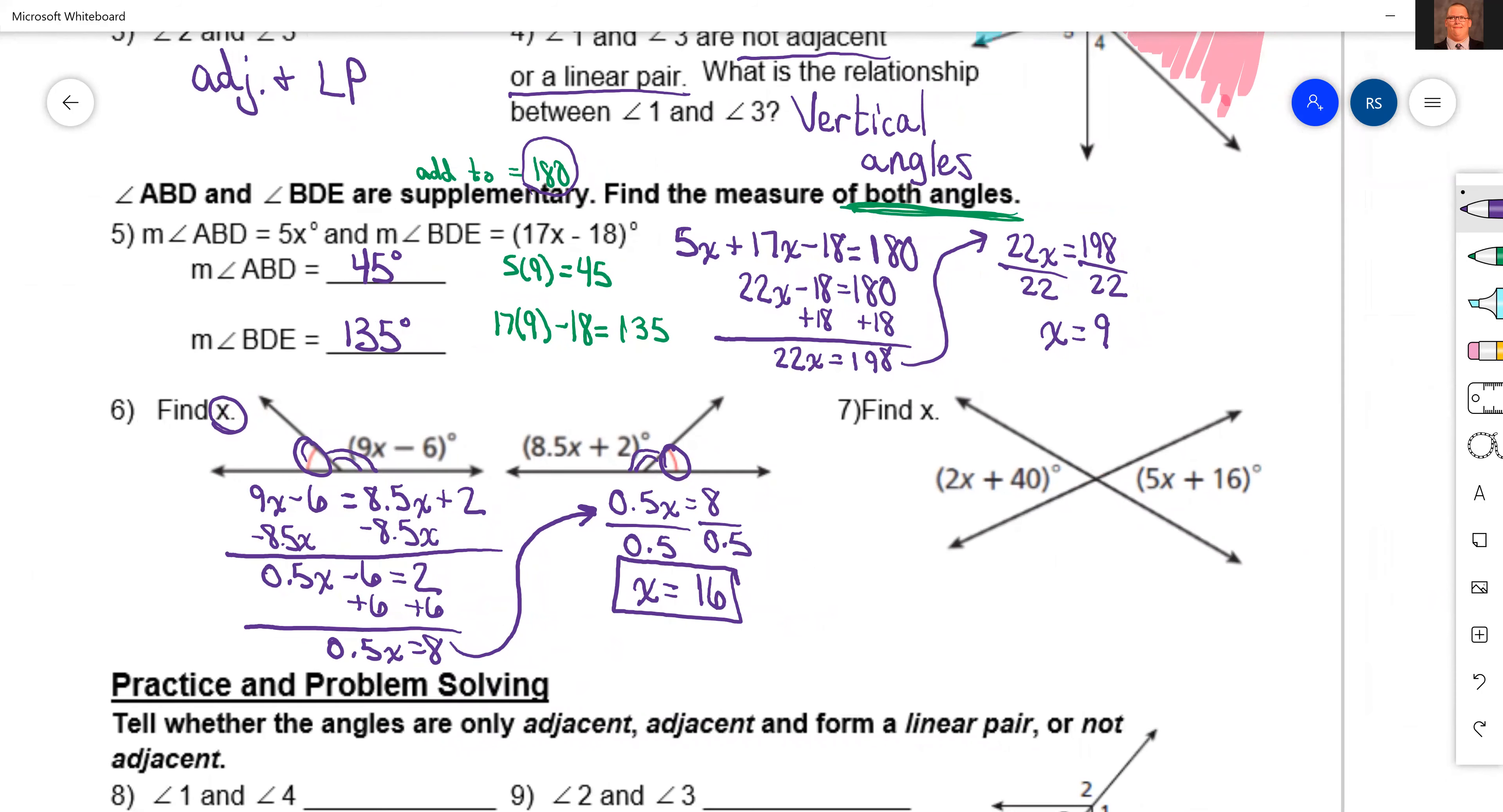And then the last one on the guided practice. What kind of angles are these? The ones that they give you the equation for. These are vertical angles. And what do we know about vertical angles? They're congruent, or you could also say they're equal.